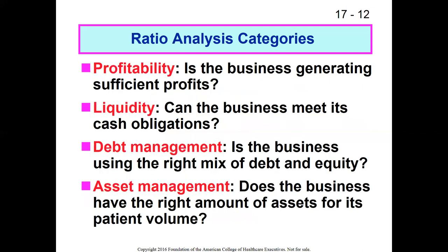Broad categories for ratio analysis include: profitability — is the organization generating sufficient profits? Liquidity — does the organization have enough cash or easily liquidated assets to cover upcoming liabilities? Debt management — is the business using the right mix of debt and equity, which is a question of capital structure? And asset management — does the organization get a good return on its assets?